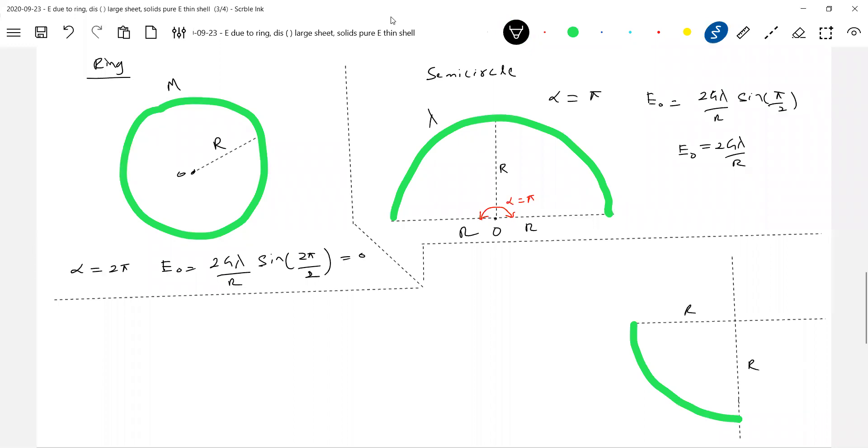So, this will be like a quarter circle. What is alpha? This is alpha. This angle is what alpha? And let linear mass density be lambda. What is the magnitude? First we will get into the magnitude part. EO should be equal to 2G lambda by R, sine of alpha, alpha is what? Pi by 2. So, this will become 2G lambda over R. Pi by 4, so this will become 1 by root 2 or root 2G lambda by R. This is only magnitude.